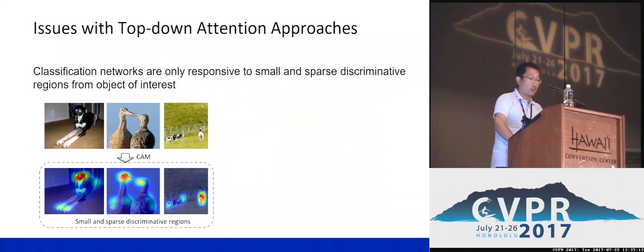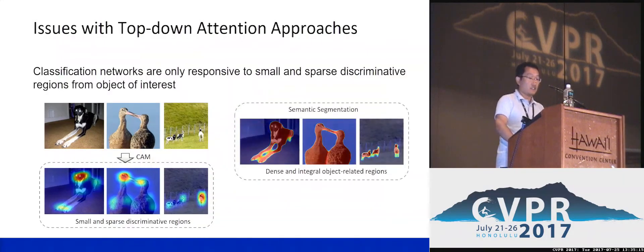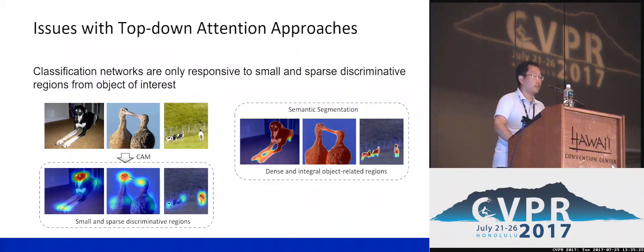We show some results directly produced by CAM. We can see that only some discriminative parts or instances are highlighted, which means that these parts or instances contribute a lot for image classification. However, reliable semantic segmentation models rely on dense and integral localization. Therefore, driving current top-down methods to localize dense object regions is meaningful.